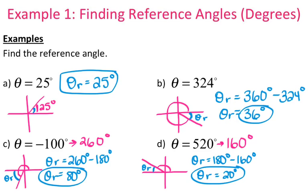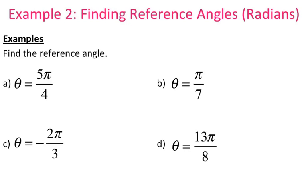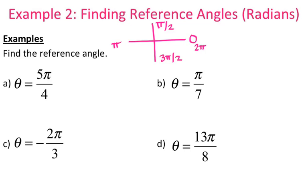Let's go ahead and work with radians. Radians are a little tricky if you're not super familiar with them. In terms of radians: 0 is 0, pi over 2 is 90 degrees, pi is 180, 3 pi over 2 is 270, and 2 pi is 360. It's important to know that so you can figure out which quadrant you're in. I don't want you to convert all of these radians to degrees — you can if you really want to, but I want you to get used to working with radian measure instead of always converting back and forth.